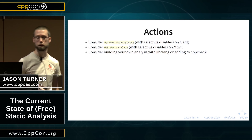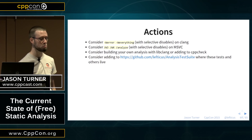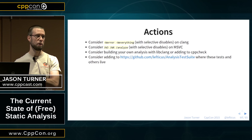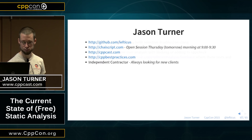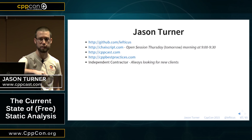Now that these things are available to us, let's start using them. All the examples here plus a bunch more are in a repository I called my analysis test suite — it's basically a repository of how not to write C++ code while still letting the compiler give you no warnings. Contribute if you have any ideas. Come check out the open session tomorrow morning on ChaiScript.